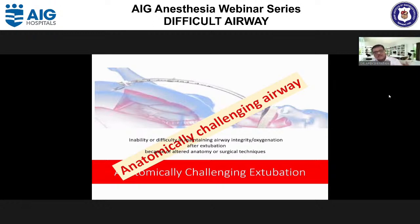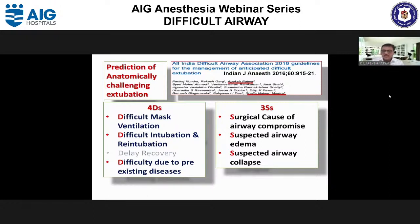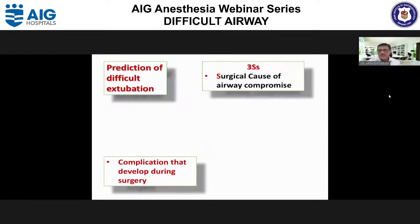Before going into airway management during induction, I will first discuss anatomically challenging extubation. In 2016, the AIDA guideline identified predictors for anatomically challenging extubation in two groups: patients with 4D and patients with 3S. The 4Ds include difficult mask ventilation, difficult intubation, difficult re-intubation, and difficulty due to pre-existing disease. The 3Ss include surgical cause of airway compromise at recovery, suspected airway edema, and suspected airway collapse.